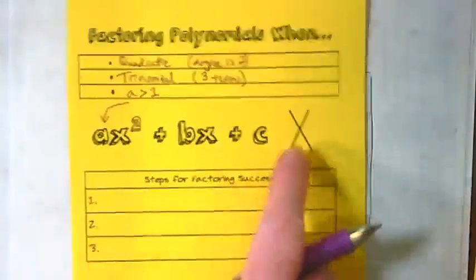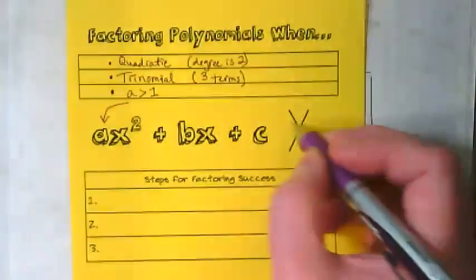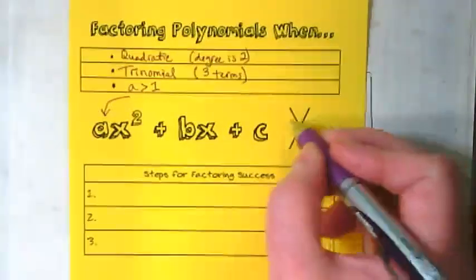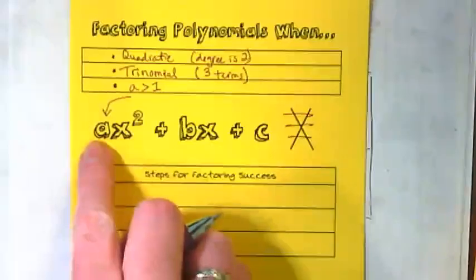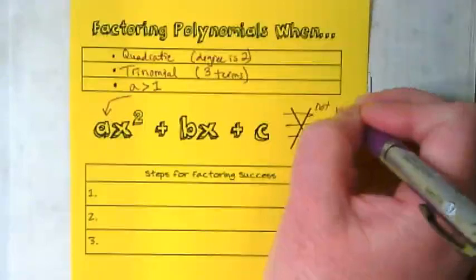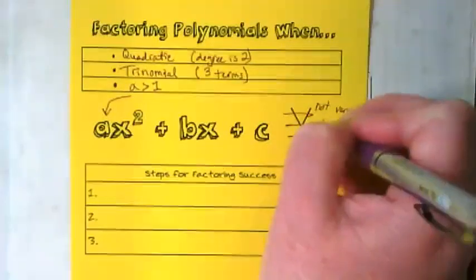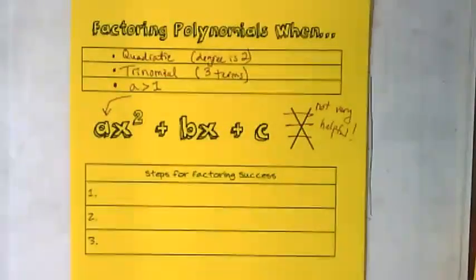Another thing that's different is it's much more challenging to use an X puzzle on these. It's possible, but it's pretty tricky. So we're going to cross this out and remind ourselves that when there's a number here, the X puzzle is not very helpful. I don't use the X puzzle when I'm solving these.